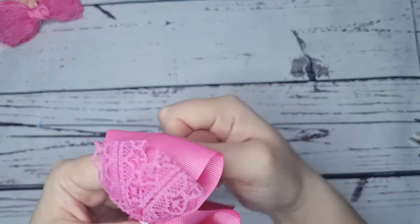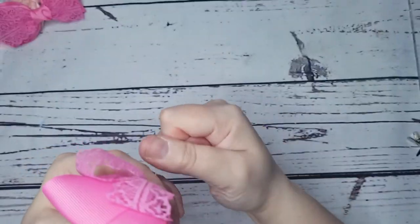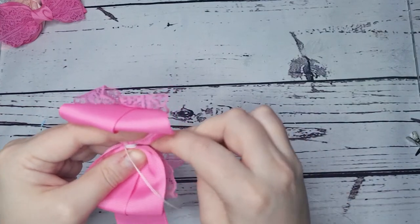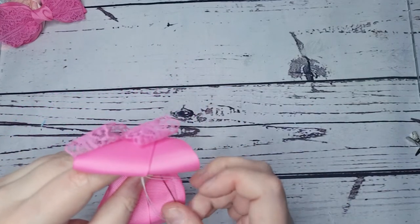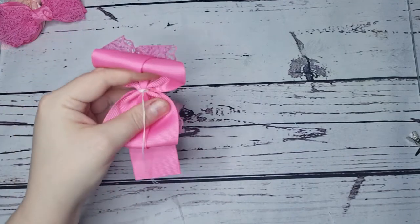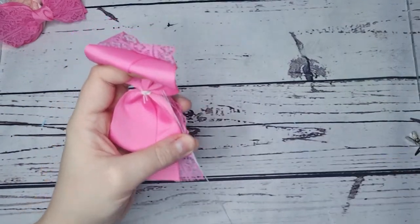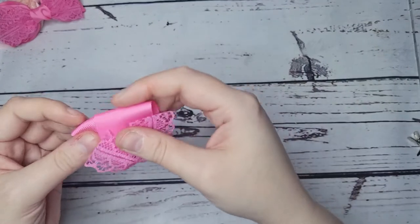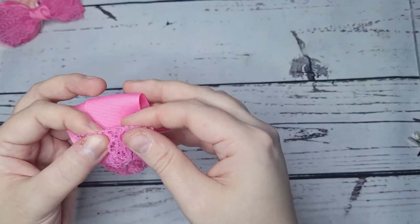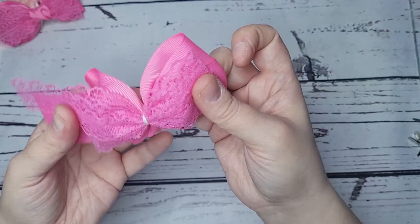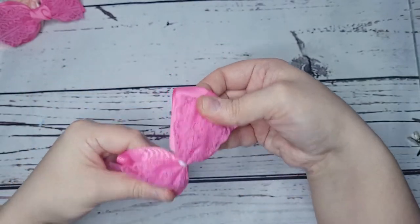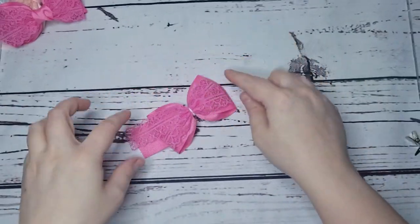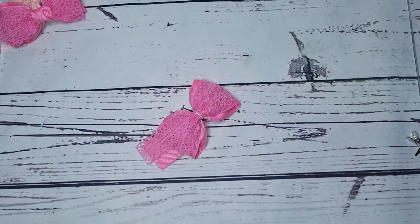I wrap around nice and tightly a good couple of times and then I'm just going to stitch off in the back. I like to give it a little tweak - that gets it all nice and lined up.